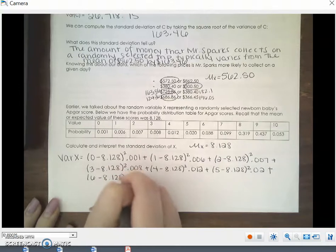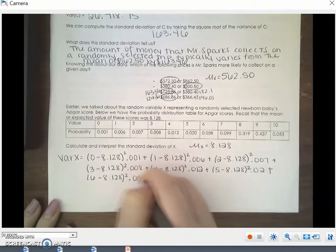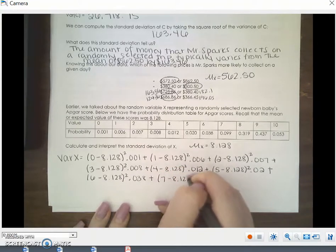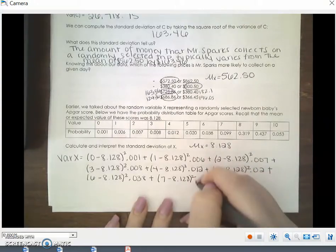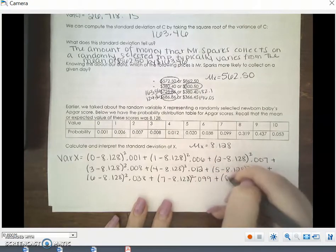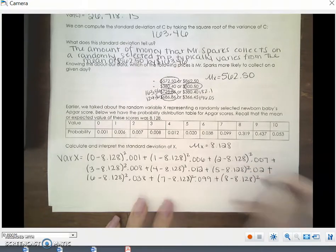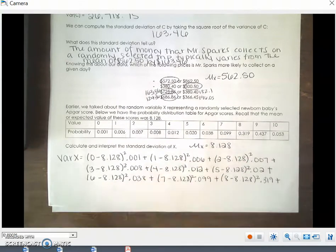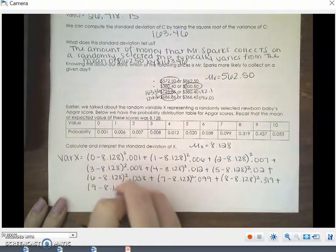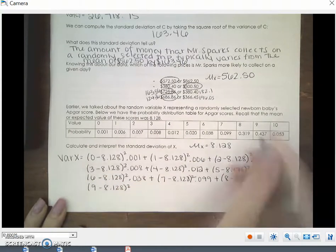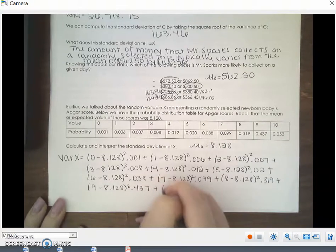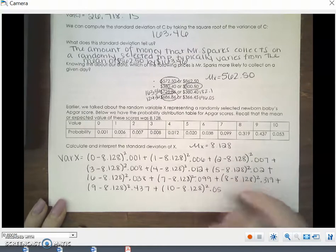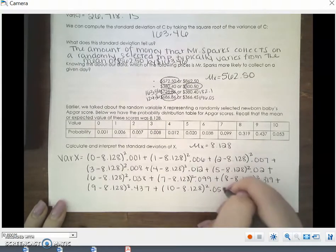6 minus 8.128 squared times the probability, 7 minus 8.128 squared times 0.319, plus 9 minus 8.128 squared times 0.437, plus last but not least, 10 minus 8.128 squared times the probability 0.053. And you would have to type that out into your calculator.